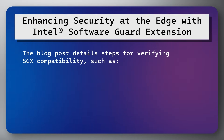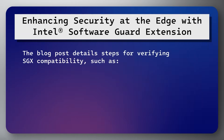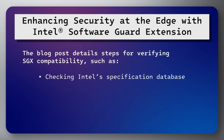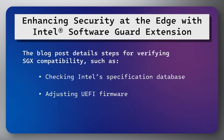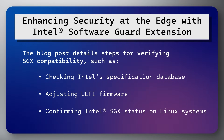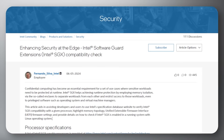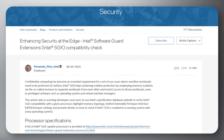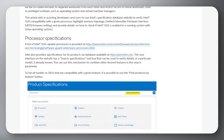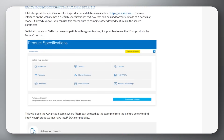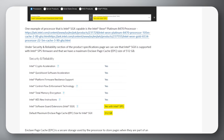The blog post details steps for verifying SGX compatibility, such as checking Intel's specification database, adjusting UEFI firmware, and confirming SGX status on Linux systems. It highlights the importance of correct memory configuration and lists SGX-capable processors, including the Intel Xeon Platinum 8470.